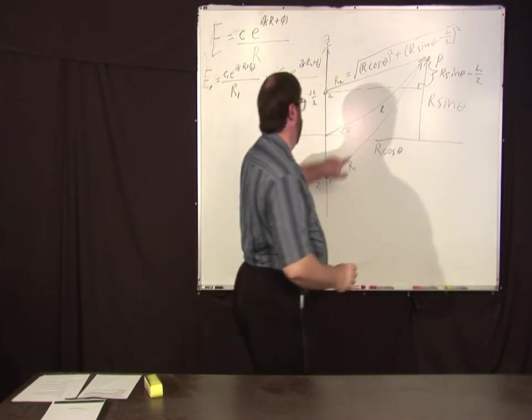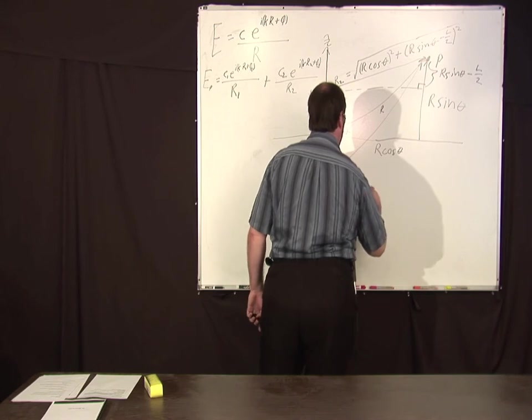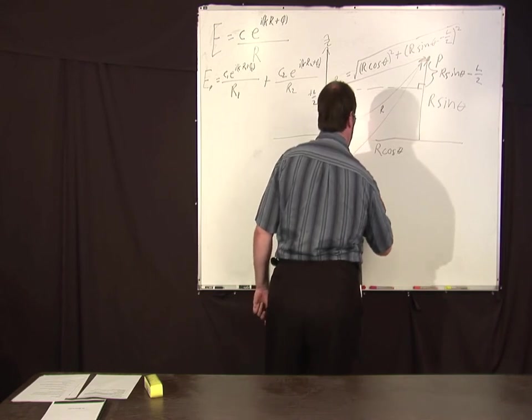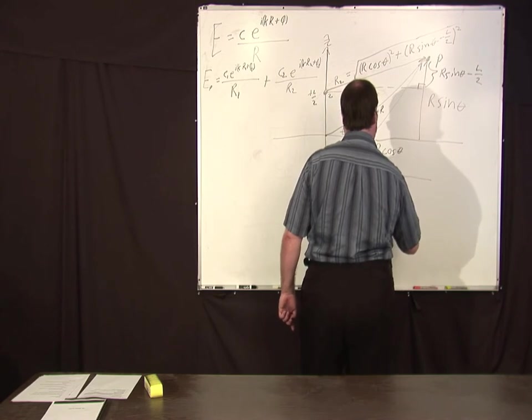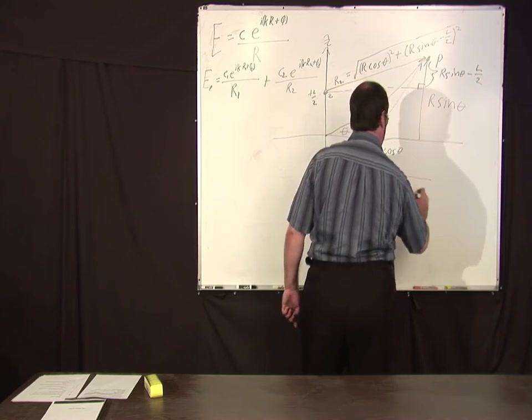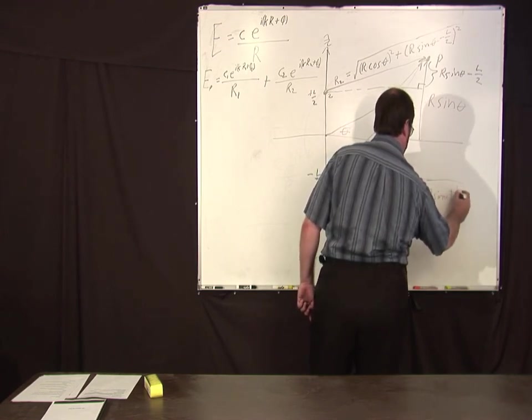Okay, what's r1? Well you can do the same sort of argument and you get r1 equals square root of r cosine theta squared plus r sine theta plus l over 2 squared.